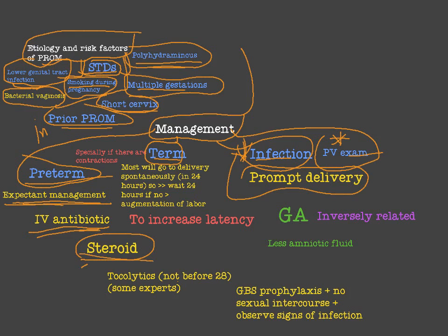Regarding tocolytics: normally with steroids we give tocolytics, but in premature rupture of membrane it depends on gestational age. Below 28 weeks we mostly don't give tocolytics, though some experts do. Tocolytics on their own are now questionable in PROM — some experts say they are not useful, and some say they are even harmful. So tocolytics are considered questionable.